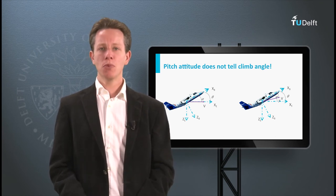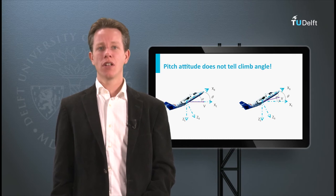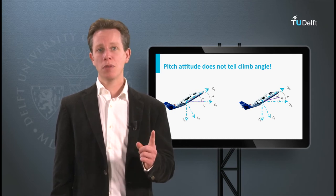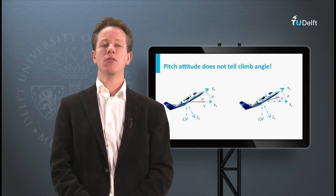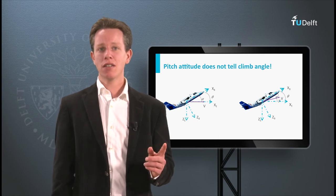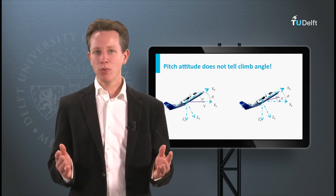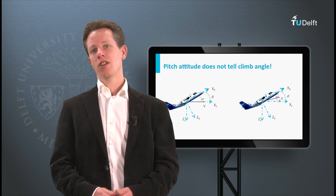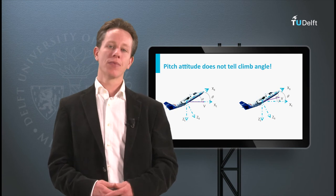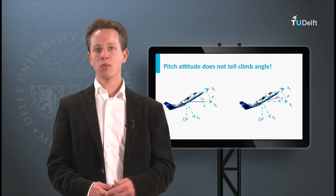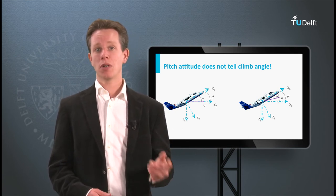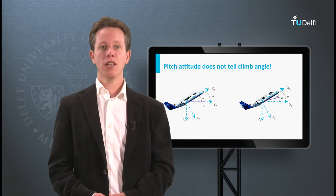I hope this illustrates clearly that the pilot cannot observe the flight path angle itself. Therefore, it is much more convenient to tell the pilot at which airspeed the aircraft can climb the steepest. Then, the pilot only has to look at the airspeed indicator and apply full throttle. This will even work when it is night time or when the aircraft is flying through clouds. Having said that, let's start with the calculation of the maximum climb angle and the corresponding airspeed.